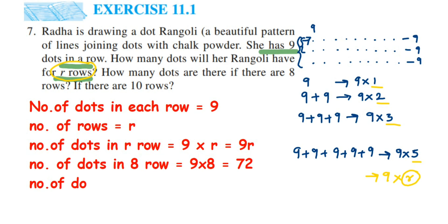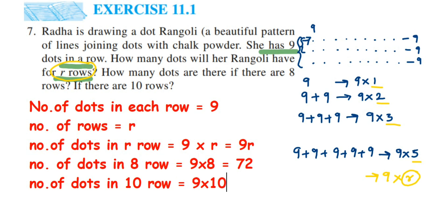For ten rows, substitute R equals ten: nine into ten equals 90. Similarly, for a hundred rows it would be nine into 100. This is a simple question — you just need to multiply nine by the number of rows. If you have any questions or doubts, drop a comment. Thank you for watching!